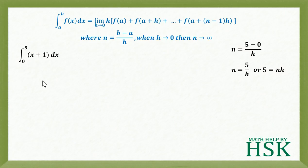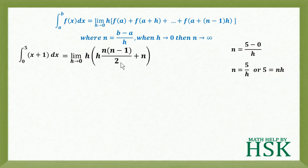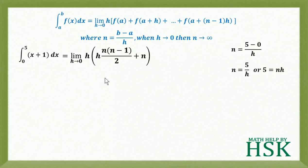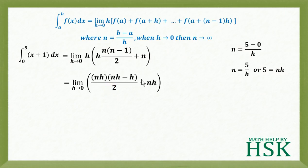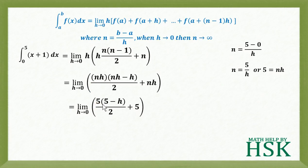So ∫(x+1)dx from 0 to 5 = limit h→0 of h·[hn(n−1)/2 + n]. We cannot apply the limit directly because of the variable n. So we multiply h into the bracket: we get nh(nh − h)/2 + nh. Since nh = 5, this becomes 5(5 − h)/2 + 5.